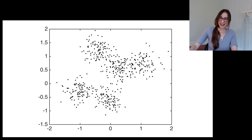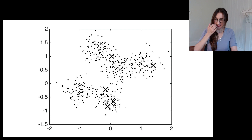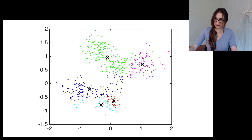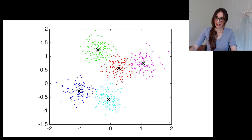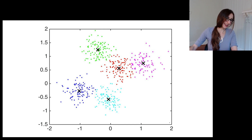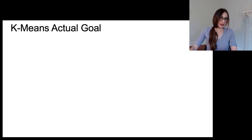Let's pop those initial cluster centers on there and start iterating. After one iteration, two, and we keep going — and that's the final solution after about 15 iterations. So that's k-means.